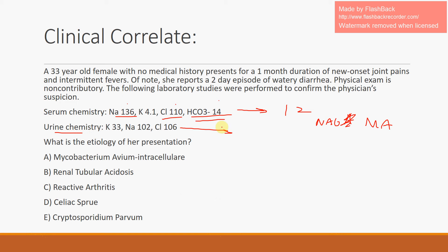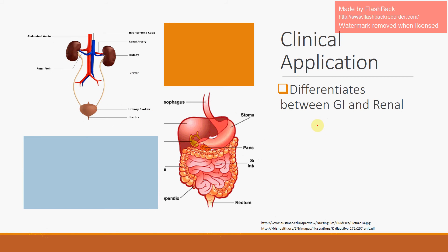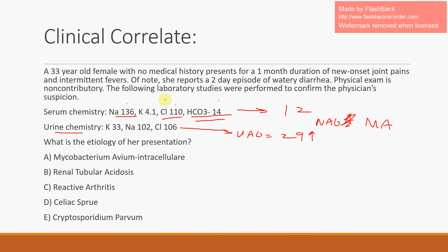He ordered the urine chemistries. Calculating the urine anion gap: 102 plus 33 is 135, minus 106, equals 29. This is very elevated and positive. When the urine chloride is low, that signifies that protons or ammonium in the urine is low — because of a renal tubular acidosis. The answer is B — this is a renal tubular acidosis.